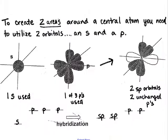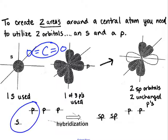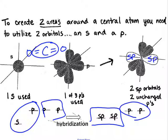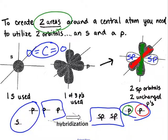With two areas — like in carbon dioxide, which has a linear electronic structure — we use two of the orbitals, mix them up, and get two brand new orbitals each called sp. That leaves us with two unhybridized P orbitals. It looks like four orbitals, but it's really just one P and one P with long lobes. So we have an sp, an sp, a p, and a p. For two areas in a linear electronic structure, the hybridization is sp.